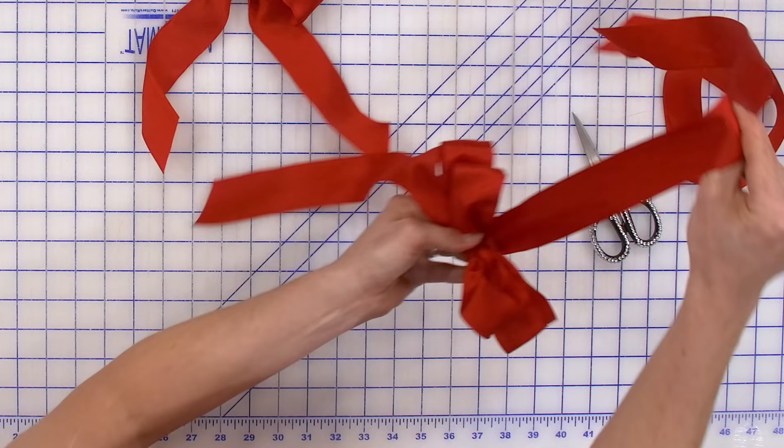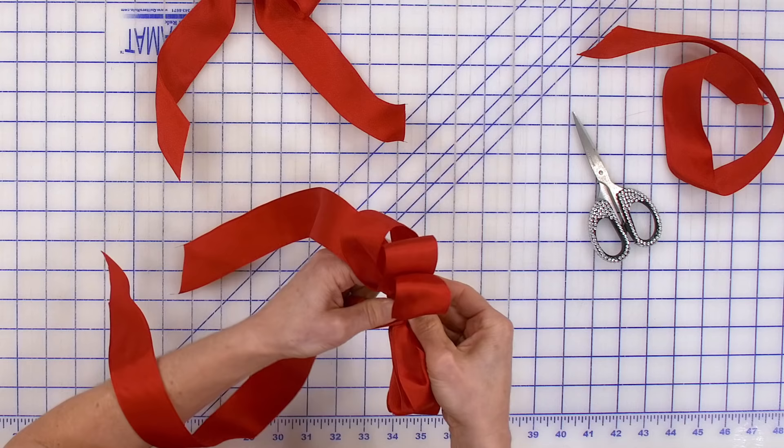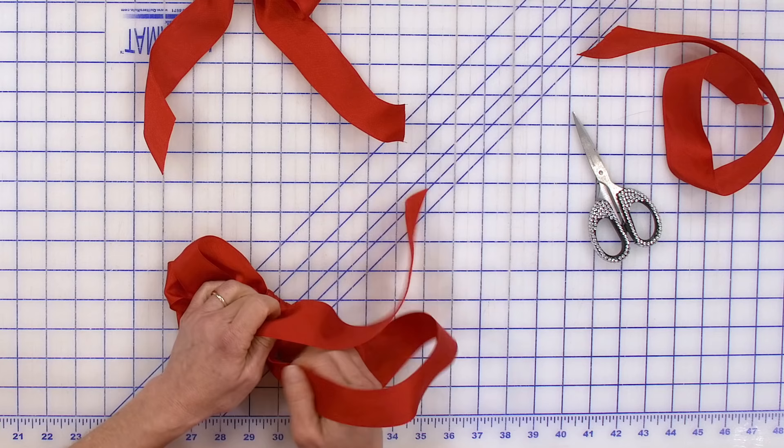So a method that I came up with is just start looping that ribbon a couple times around the middle. You can squeeze that in there.